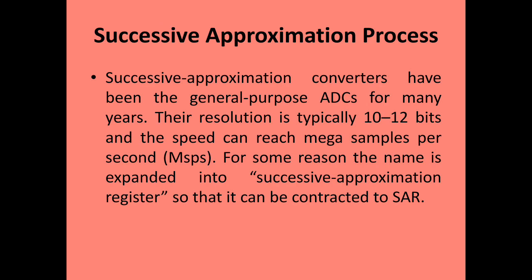Now we are going to see the conversion process of analog to digital information using the successive approximation method. Successive approximation converters have been general-purpose ADCs for many years. The resolution is typically 10 to 12 bits, and the speed can reach mega-samples per second. The name is expanded as Successive Approximation Register, which is called SAR.